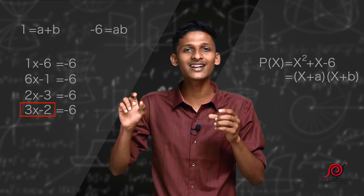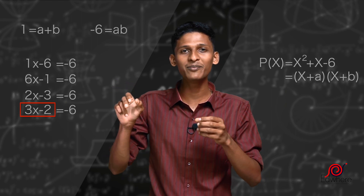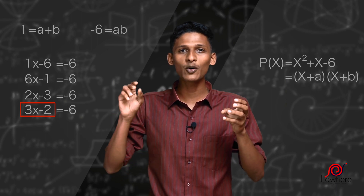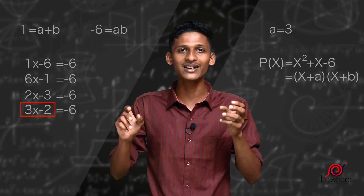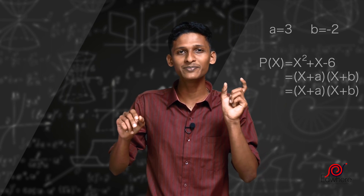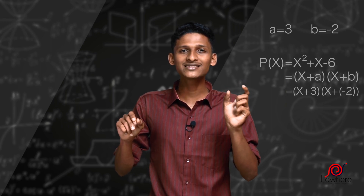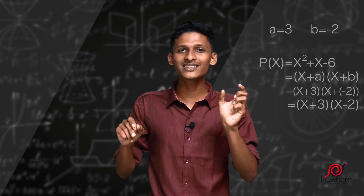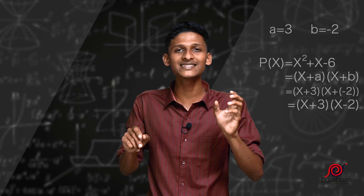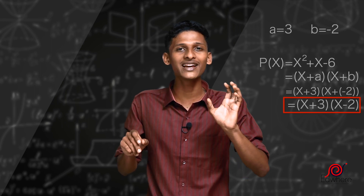We have a = 3 and b = −2, since 3 + (−2) = 1 and 3 × (−2) = −6. So the factored form is (x + 3)(x − 2). We can verify: x² + 3x − 2x − 6 = x² + x − 6, which matches our original polynomial.